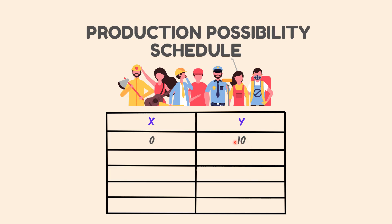So Y is 10. If the country starts to produce X — 1 unit — that will decrease the production of Y to 9. When X is 2, the production of Y will decrease to 7. When X is 3, Y is 4. And at the last stage, when they use all their resources to produce 4 units of X, they can't produce any unit of Y. From this schedule, we see that if the country produces only Y and no amount of good X, then it can produce a maximum of 10 units of Y, giving a combination of 0 and 10 on the production possibility curve.